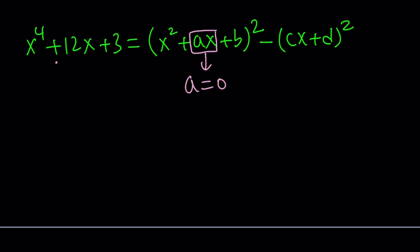So I can go ahead and rewrite this: x squared plus b squared minus cx plus d squared. Now let's go ahead and expand the right-hand side. x to the fourth plus 2b x squared plus b squared minus c squared x squared minus 2c dx minus d squared from the expansion.